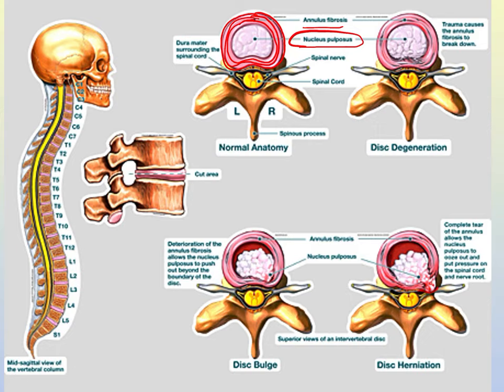Over time, you can have disc degeneration from normal aging. Our cells don't repair or maintain tissues as well as we age, and this also occurs with the intervertebral discs. The annulus fibrosis may become thin and start to break down over time, and it allows the nucleus pulposus — because we're pushing on it constantly — to create a disc bulge.